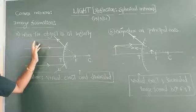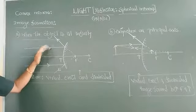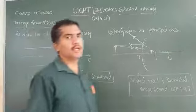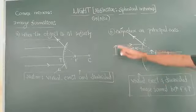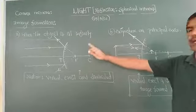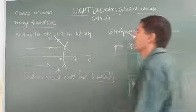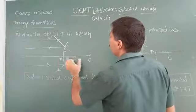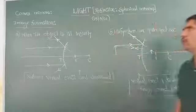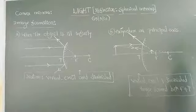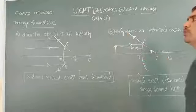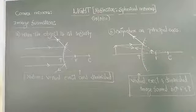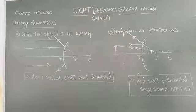A concave mirror can form both real and virtual images, but a convex mirror can produce only virtual images. There are only two positions, and only two different diagrams for writing the position of images where objects are kept at different places. Take focus as the midpoint of the pole and center of curvature. This is about the convex mirror. In the next class, we will be discussing about uses of mirrors.